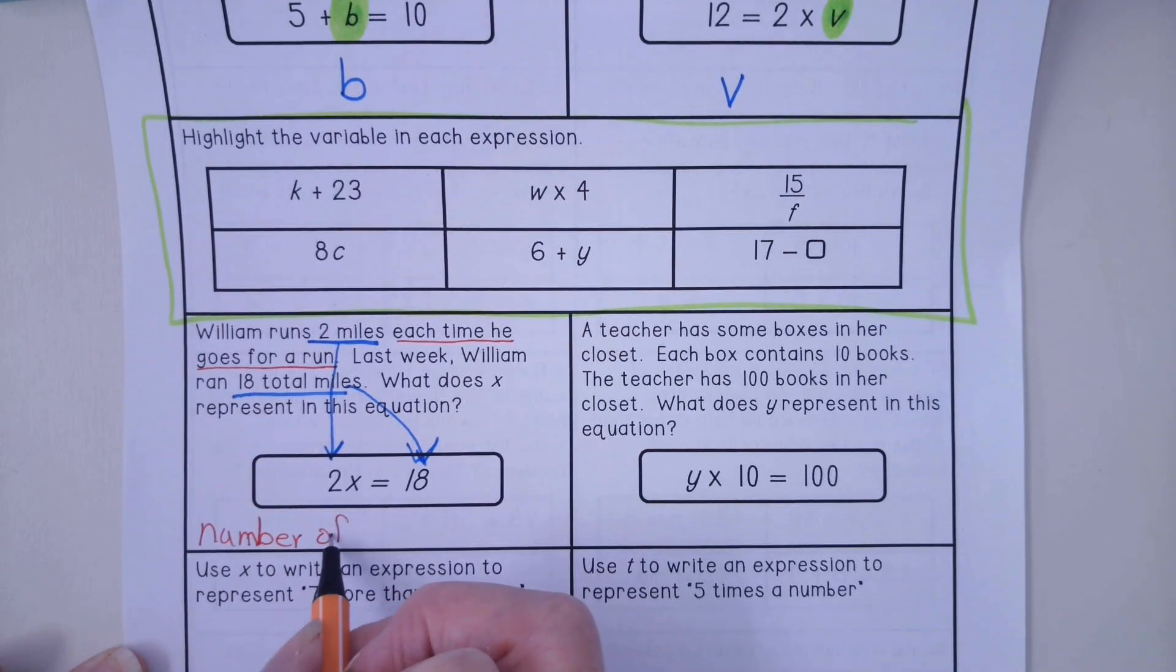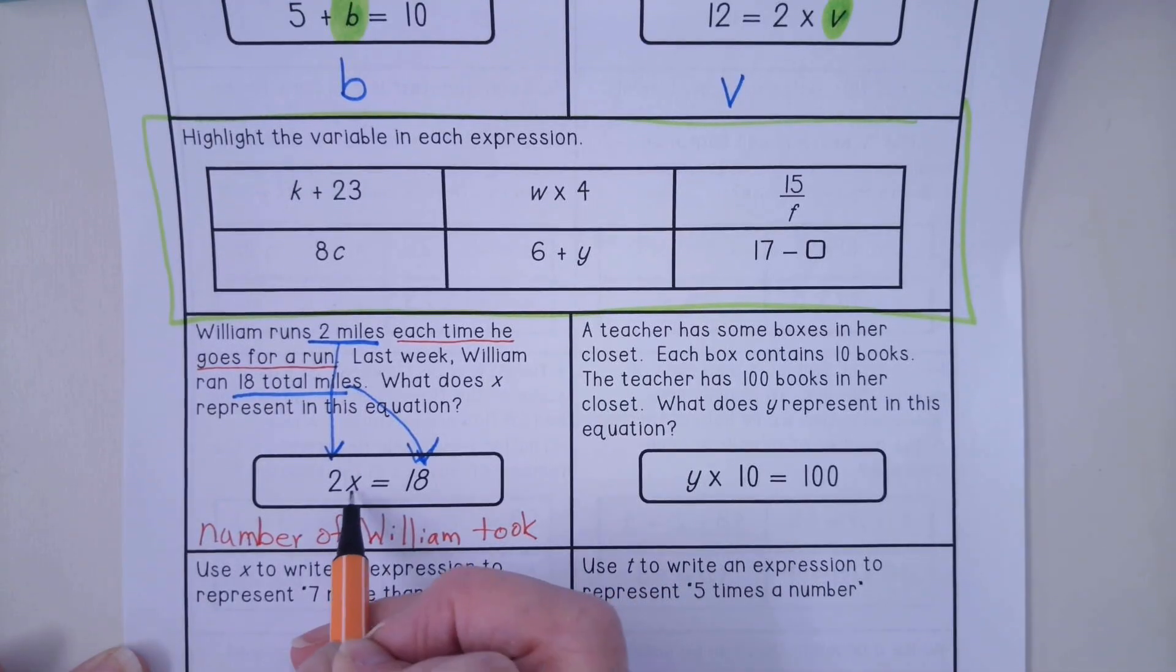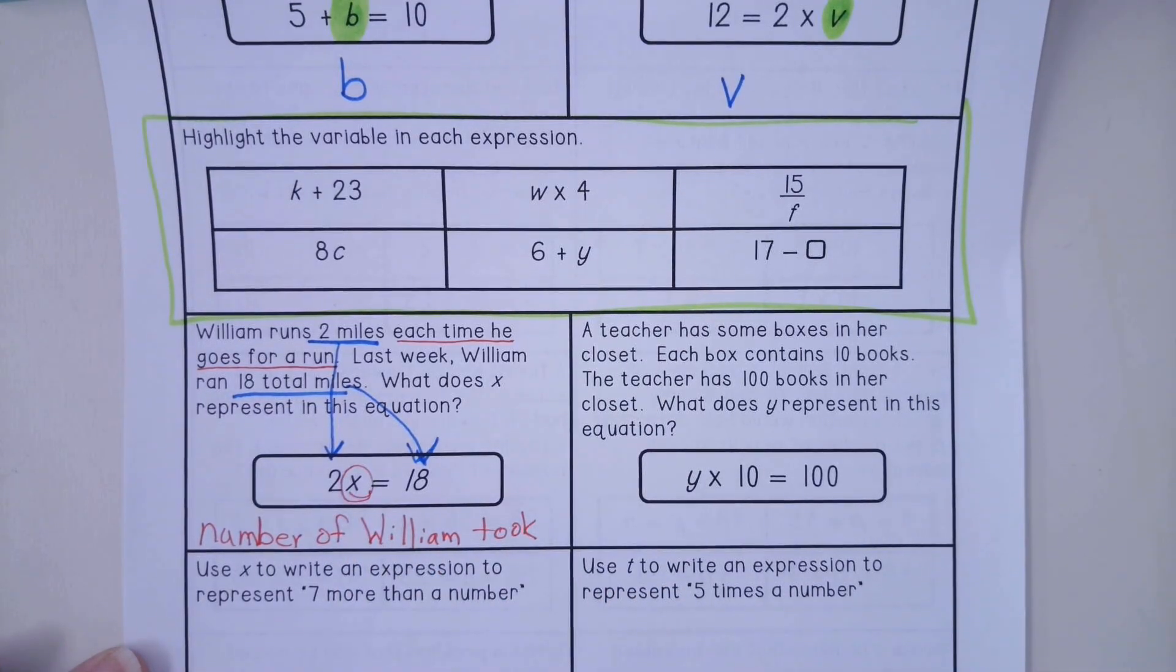So the variable is representing each time he goes for a run. All right, so it means the number of runs William took. We don't know if William ran for five days or seven days. Okay, so that is our variable in this question.